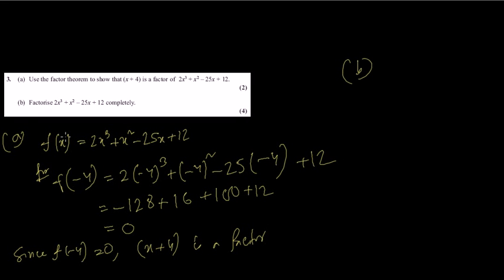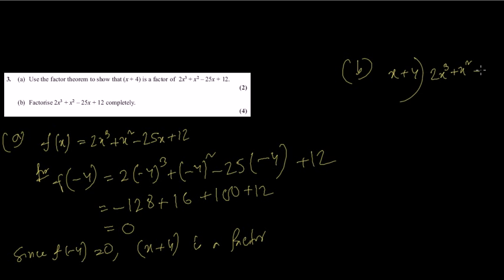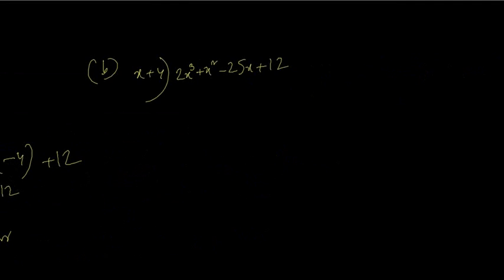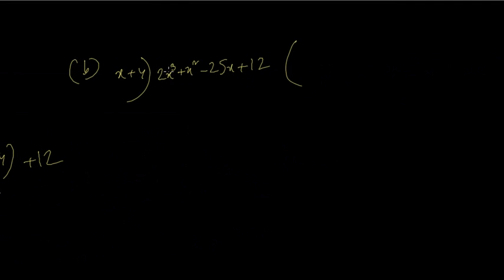Question 3b: we have to factorize this expression completely. The rule for factorizing is using long division — that's the best and simplest way to factorize a cubic expression. So let's divide 2x³ plus x² minus 25x plus 12 by the factor x plus 4. We need 2x³ here, so 2x² times x is 2x³, and 4 times 2x² is 8x².